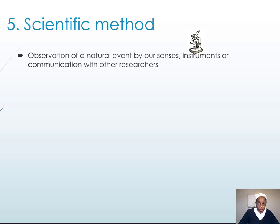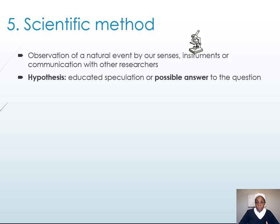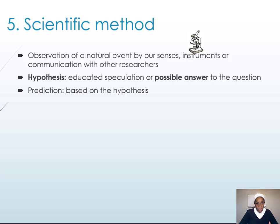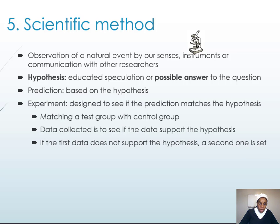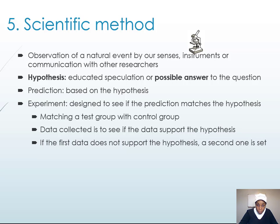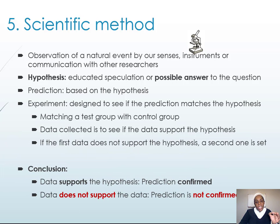So let's talk about the scientific method. You always start with an observation — you look at something, see it, feel it, hear it, use your sense organs, instruments, or communication with other researchers. Then you formulate a hypothesis, an educated guess, a possible answer to the question. Then you make a prediction based on that hypothesis. Then you design an experiment to see if the prediction matches the hypothesis — matching a test group with a control group, for example giving medicine to one group and a placebo to another to see if the medicine works. If the data support the hypothesis, the prediction is confirmed; if not, it's not confirmed.